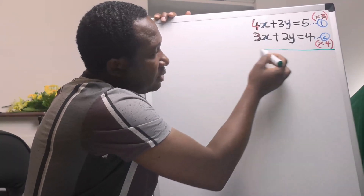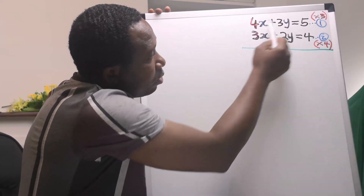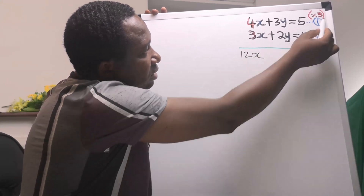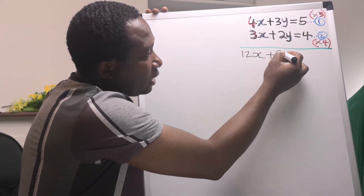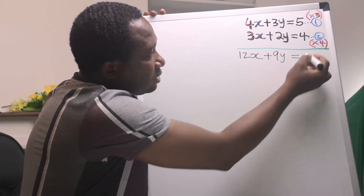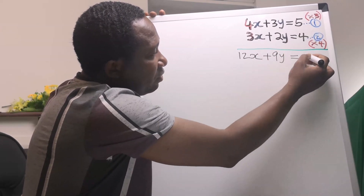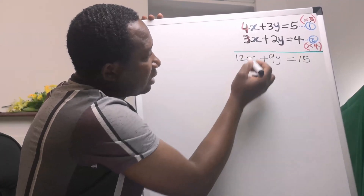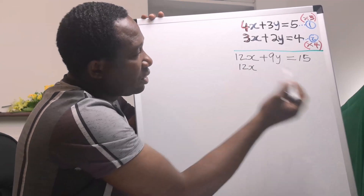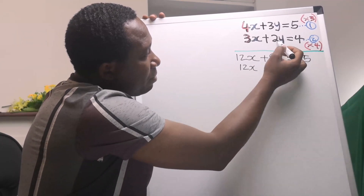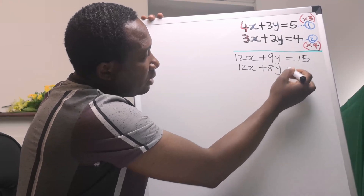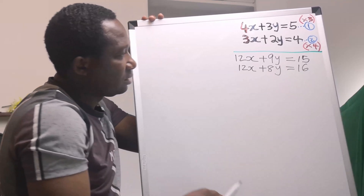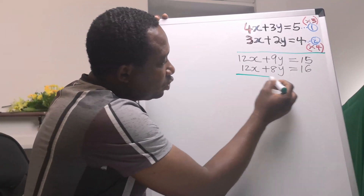You draw a line. Next, 3 multiplied by 4x gives you 12x. Next, 3 multiplied by 5 gives you 15. Next, 4 multiplied by 3 gives you 12x. Next, 4 multiplied by 2y gives you 8y. Next, 4 multiplied by 4 gives you 16. You draw a line.